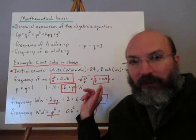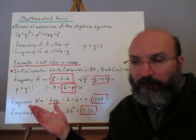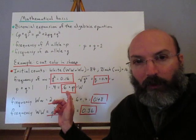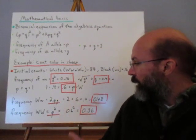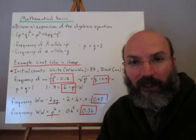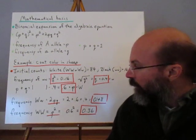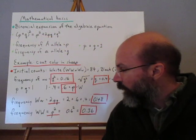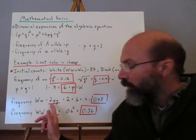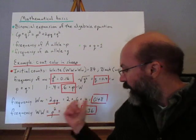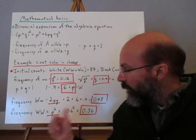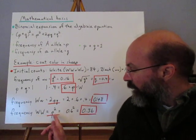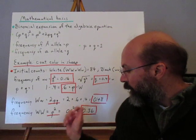Taking the square root of q² (0.16) gives us q = 0.4. Since p + q = 1, we get p = 1 − 0.4 = 0.6, which is the frequency of the dominant W allele. Using the rest of the equation, the heterozygous frequency 2pq = 0.48, and the homozygous dominant frequency p² = 0.36.